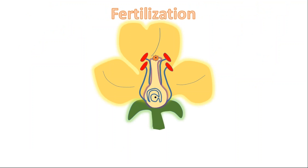Fertilization is the fusion of male and female gametes. In plants, the pollen grain contains the male gamete. It moves from the pollen grain to the ovary of a flower and fuses with the female gamete. The fusion of male and female gametes is known as fertilization.